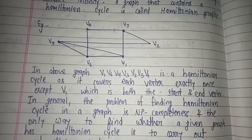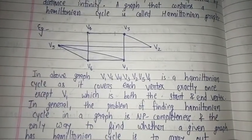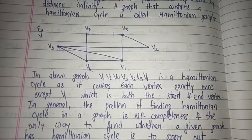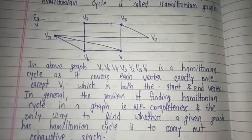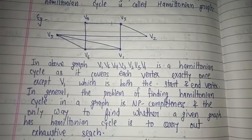And generally, the problem of finding a Hamiltonian cycle in a graph is NP-complete. I have discussed this in a previous video. You can go and watch it in our playlist. So the only way to find whether a given graph has a Hamiltonian cycle is to carry out an exhaustive search.